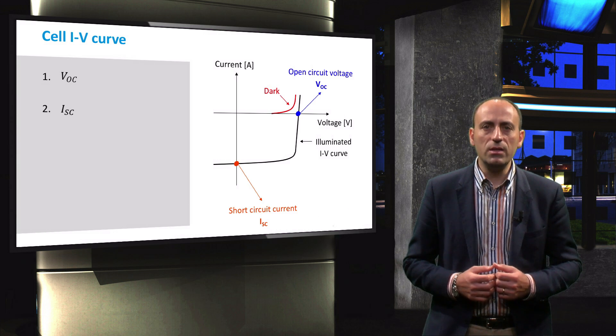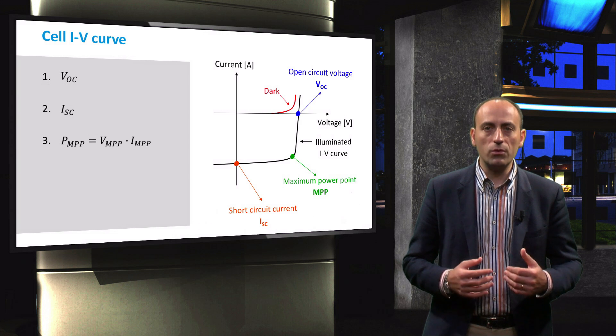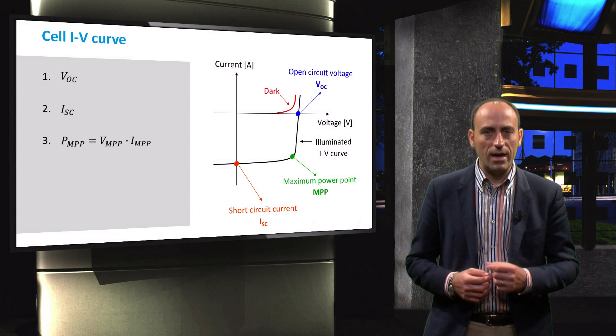The short circuit current ISC is indicated in orange. The maximum power point, where the product of the current and voltage is maximal, is indicated by the green arrow.